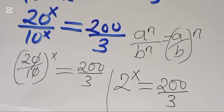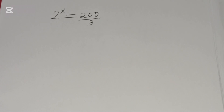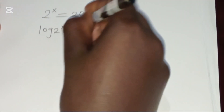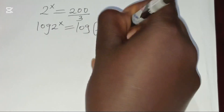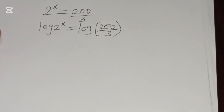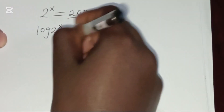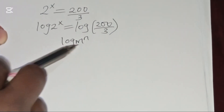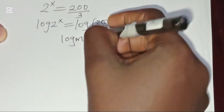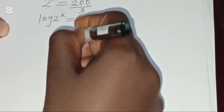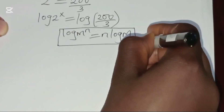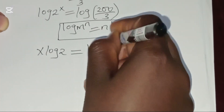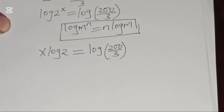To solve for x, we introduce the natural logarithm. We have log(2^x) = log(200/3). Applying the power rule property of logarithms — log(m^n) = n·log(m) — we get x·log(2) = log(200/3).